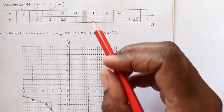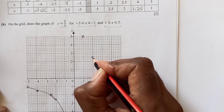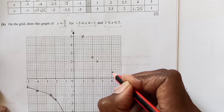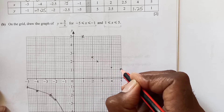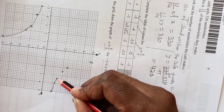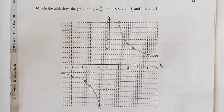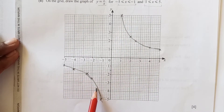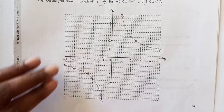Now the second part: the point (1, 5) is here. Then (2, 2.5): 2 is here, 2.5 is here. Then (4, 1.25): 1 is here, 1.25 is here. And (5, 1). We draw a freehand curve joining these points. Drawing all these curves correctly gives you 4 marks. Draw your lines very clearly with a sharp pencil — it should be neat and clean.